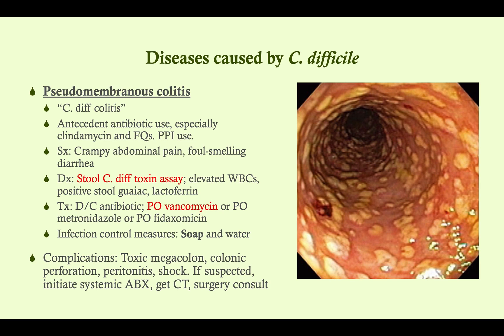The history is always going to include antecedent antibiotic use. In particular, clindamycin and fluoroquinolones are very strongly associated with C. diff. Also, proton pump inhibitor use is a big risk factor — if you have both together, it can cause major problems. That's because it alters the acidity of what's in the stomach, ultimately making the intestine more favorable for C. diff proliferation.